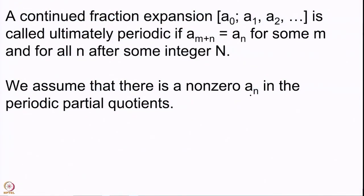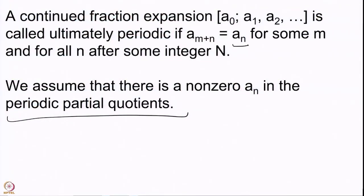We will also assume that not all a_n are zero, because a rational number is given by a finite expansion and the corresponding a_n's would be 0. We assume that some a_n is nonzero — the expansion does not terminate — and therefore it is going to represent an irrational number. Any such expansion will give you an irrational number.